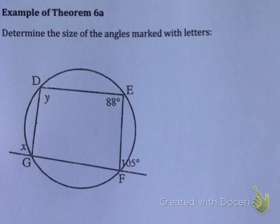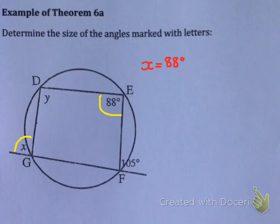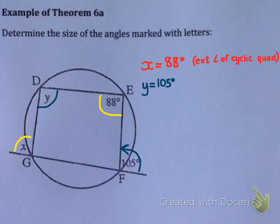This example says to determine the size of the angles marked with the letters. DEFG is a cyclic quad, and there is an exterior angle called X. X will be equal to the interior opposite angle according to this theorem. So X equals 88 degrees, and my reason is because it's the exterior angle of a cyclic quad. Now we have another exterior angle in this example, and that's 105. So 105 and Y will be equal to one another — Y equals 105 degrees, exterior angle of cyclic quad.